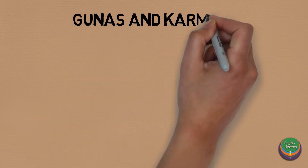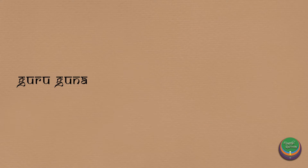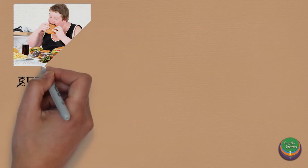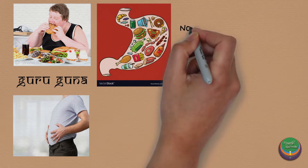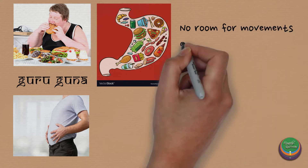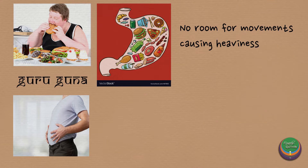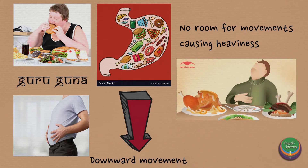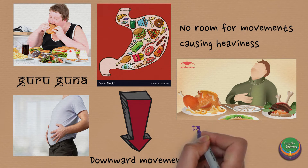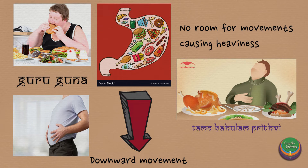The dynamics of Prithvi Mahabhuta can be understood by considering its Gunas and Karmas. The mass or Guru Guna can be understood with the following example: consider that you overeat. This distends the stomach because food is densely packed inside, leaving no room for movements. This is where the sense of heaviness or Gaurava comes from. Whatever is more Guru moves down, which is why after a heavy meal you feel tired and lethargic. This also corresponds with Tamo Bahulam Prithvi — that is, Prithvi Bhuta is predominant of Tamo Guna.